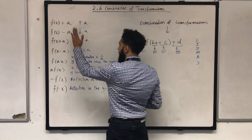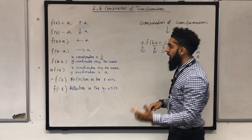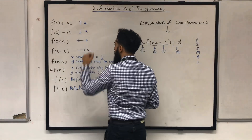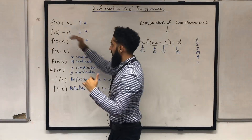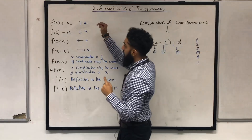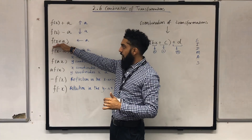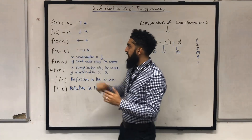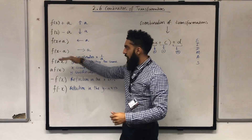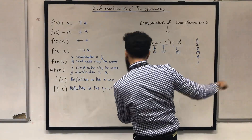Have a look at these individual transformations. The first one: we take the graph f of x and shift it a units upwards. Next, take the graph f of x and shift it a units downwards. Then, you take the graph f of x and shift it a units to the left. Take the graph f of x and shift it a units to the right.